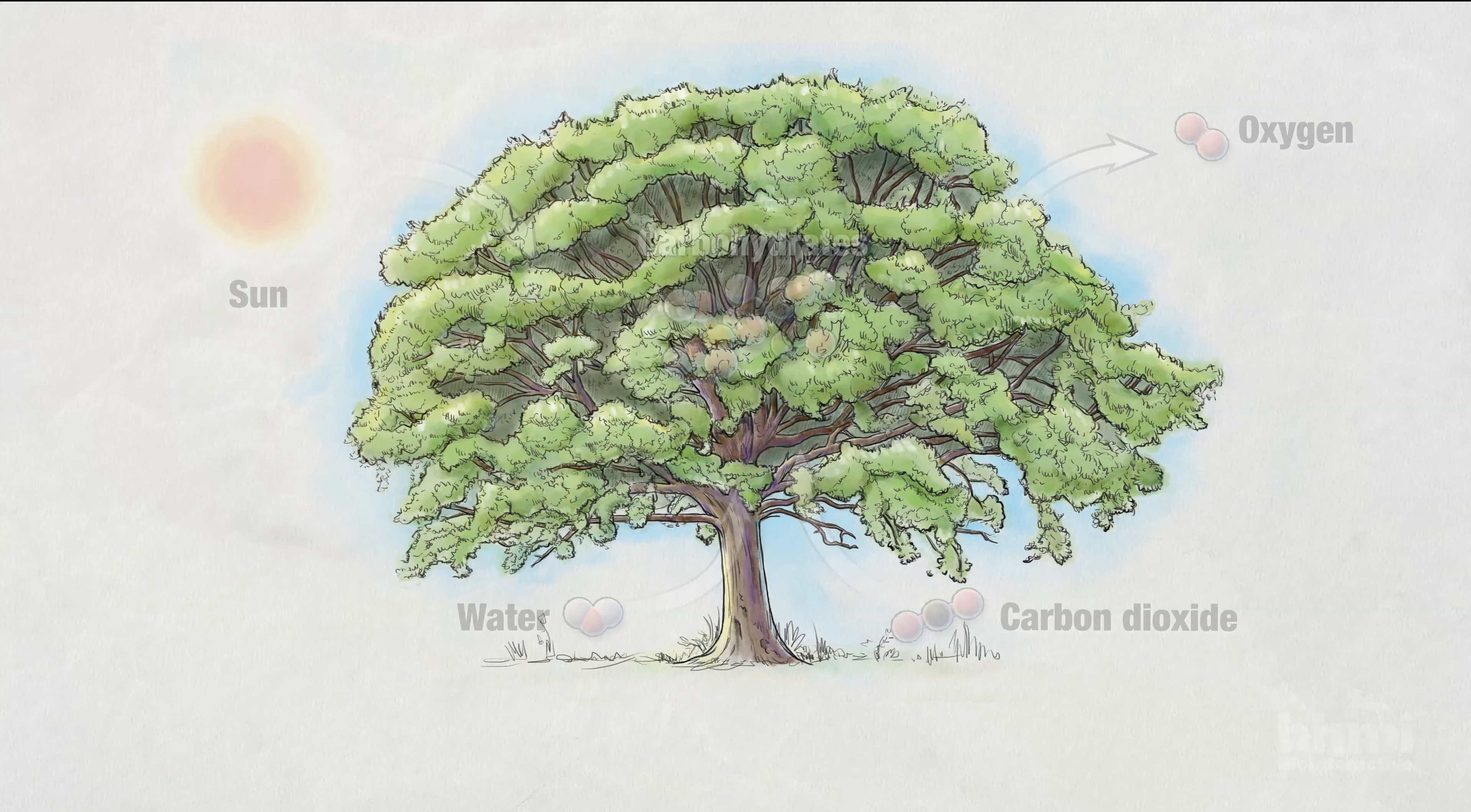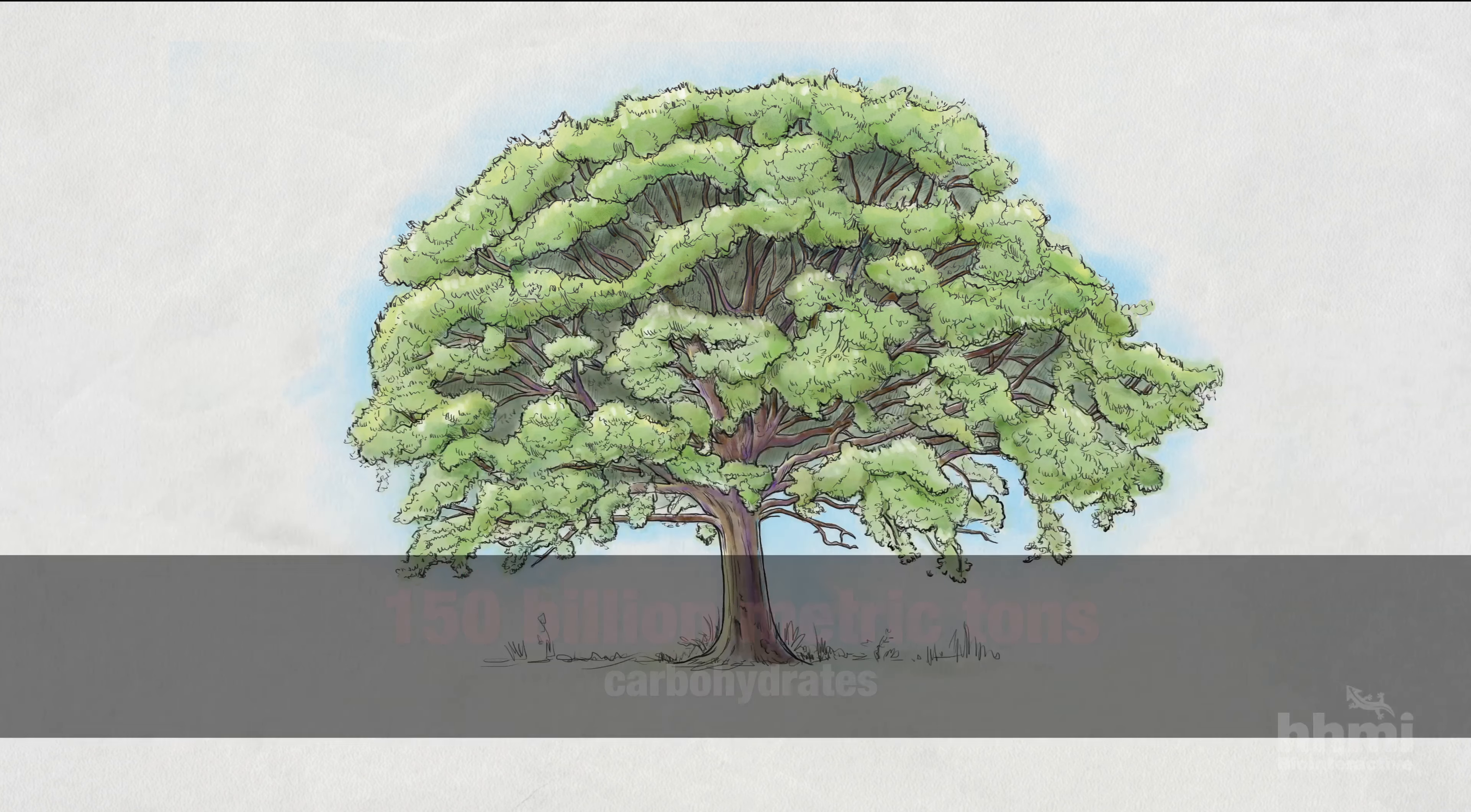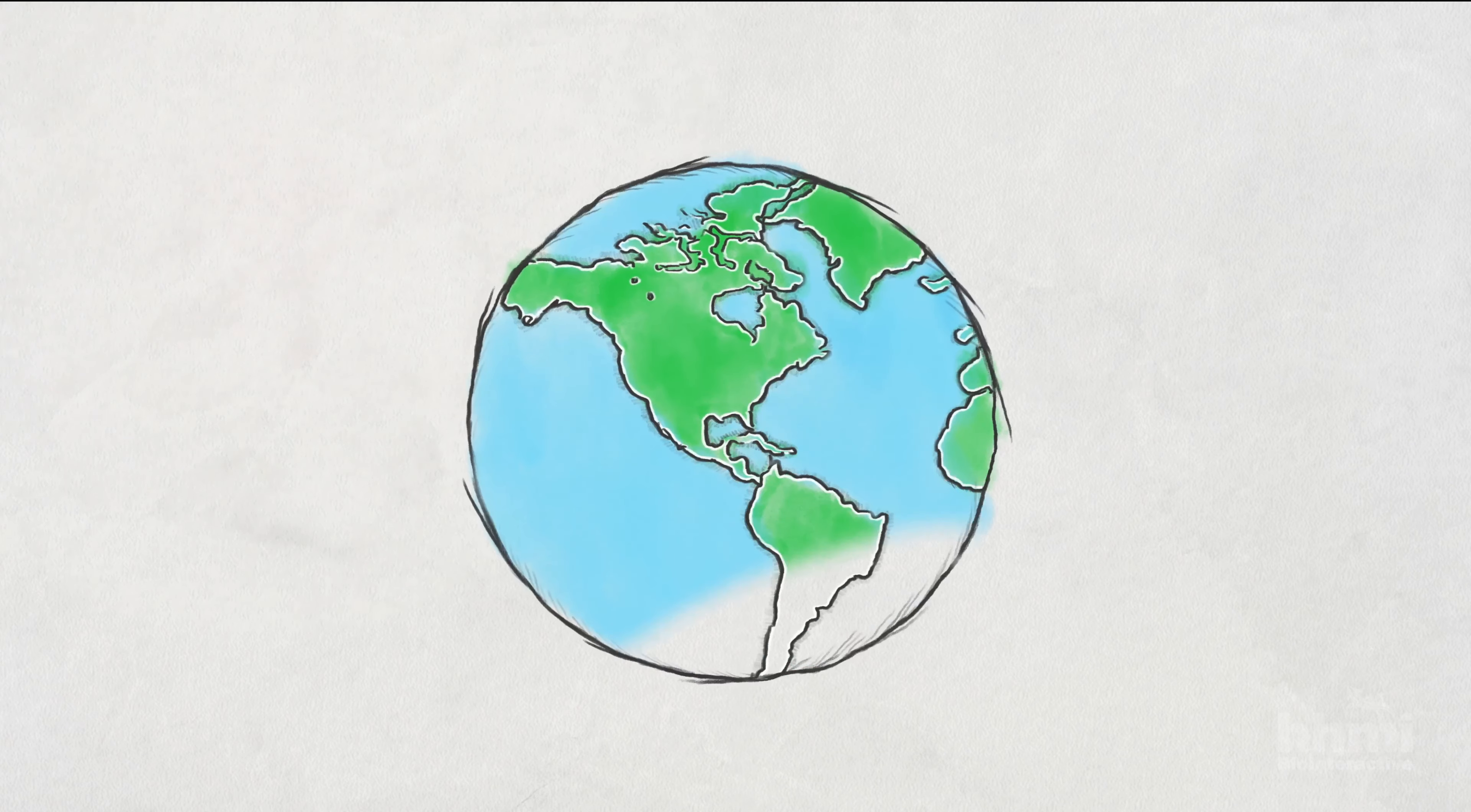Globally, photosynthesis produces an estimated 150 billion metric tons of carbohydrates per year and is responsible for the oxygen in our atmosphere, making it one of the most important chemical processes for life on Earth.